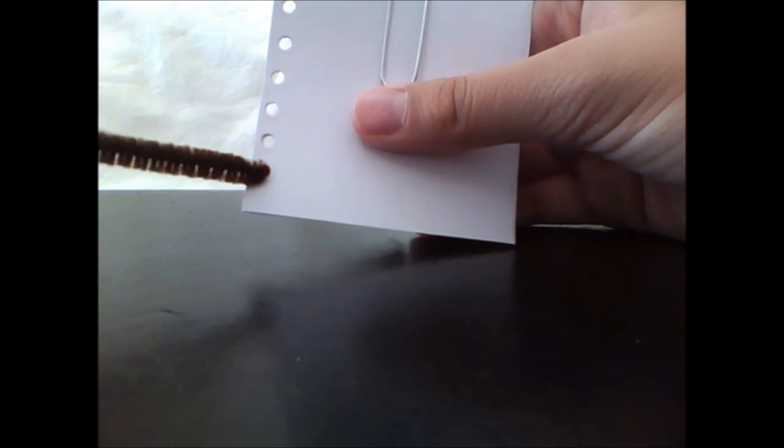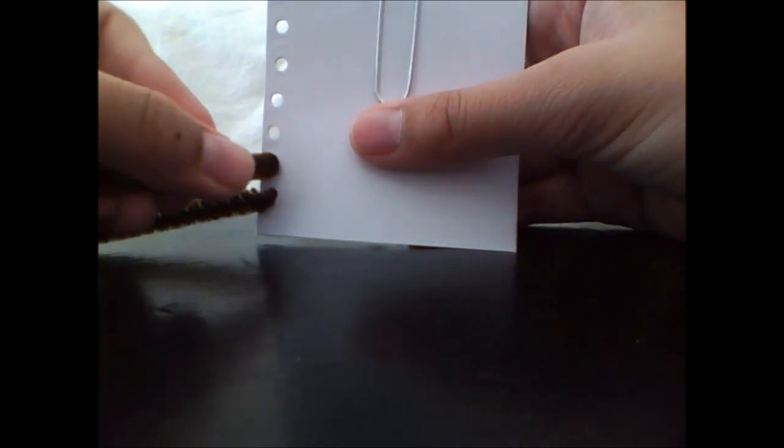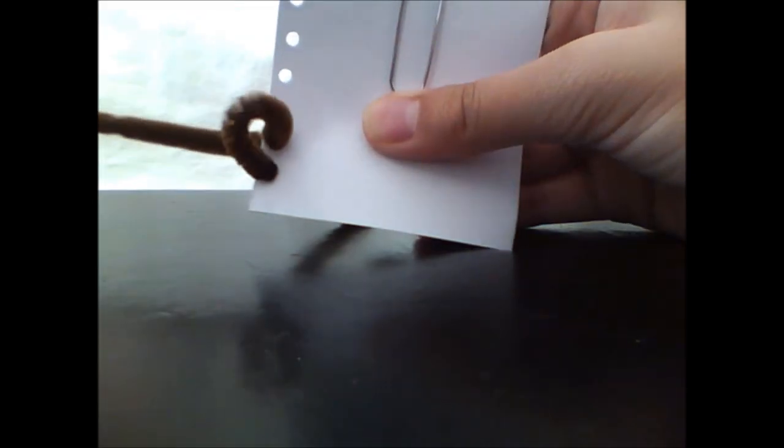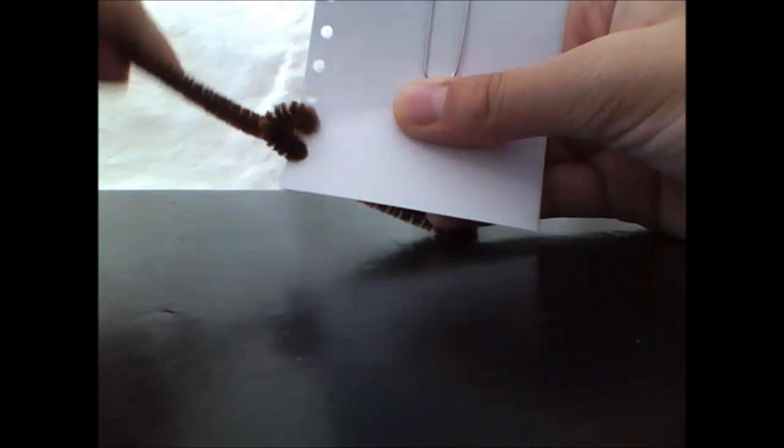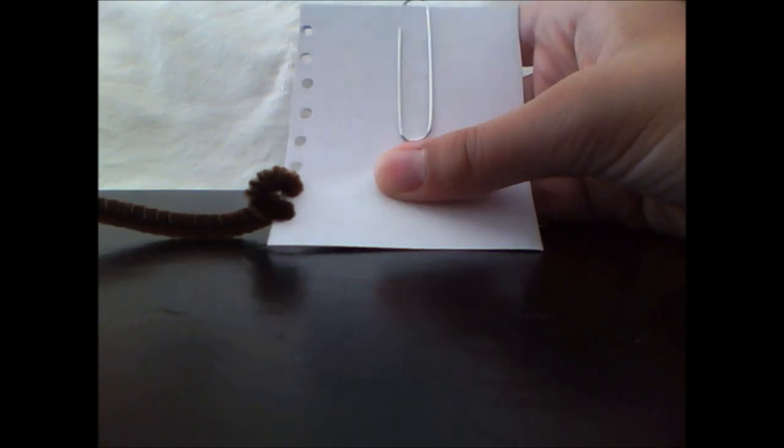What you want to do is loop it and stick it in the next hole above, then pull it. You can adjust it with your finger if you want. Just keep repeating this until you get to the top, then I'll tell you what to do.